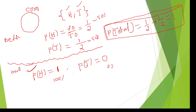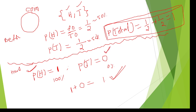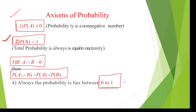So here you can see the minimum probability is zero — there is no negative value, it is non-negative. The minimum probability is zero and the maximum probability is one. Therefore the total probability: probability to get head is one, probability to get tail is zero, so maximum probability is always equal to one. These are the axioms of probability — the probability lies between zero and one.